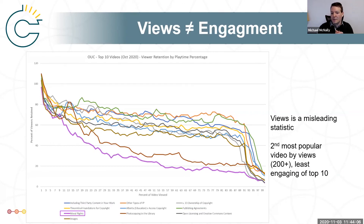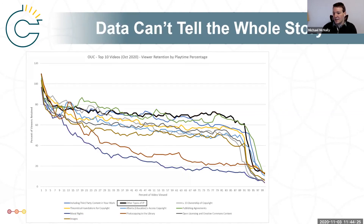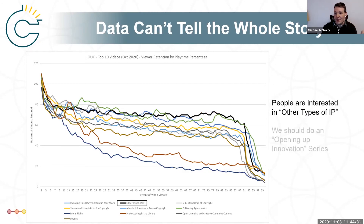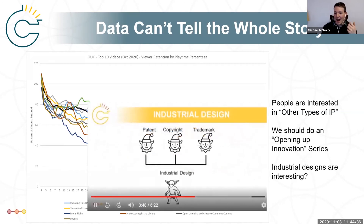On the flip side, the least popular of the most popular videos in terms of engagement is a video on moral rights. This is interesting because it's the second most popular video by views, but it's actually not very engaging. I think that's important to keep in mind — views really don't tell the engagement story. And in some cases, data doesn't tell the whole story. This video on other types of intellectual property — I have no idea. Maybe it's a suggestion we need an Opening Up Innovation series. We did include a little gremlin character in it, and perhaps that is what has kept people engaged.